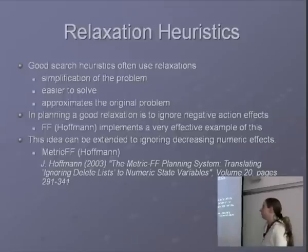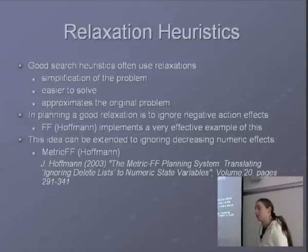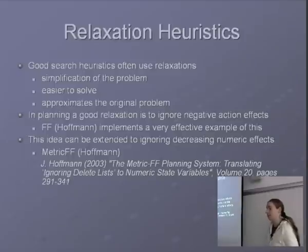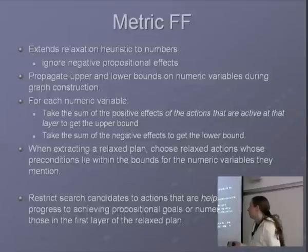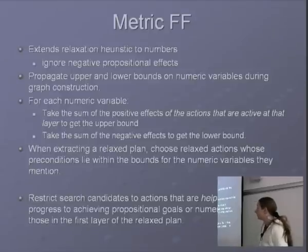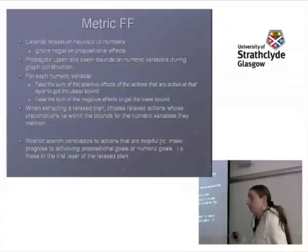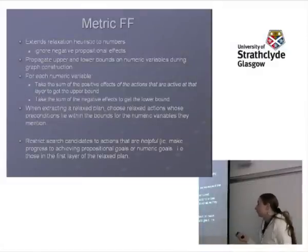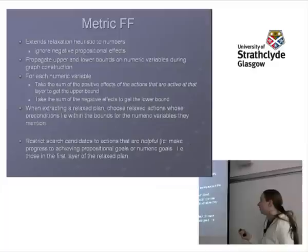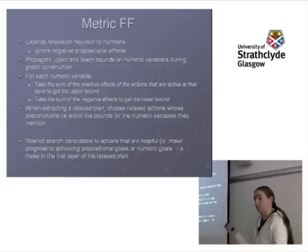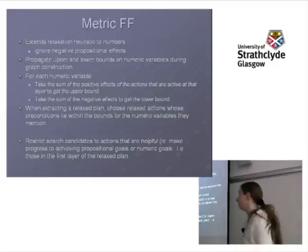Conceptually, we want to ignore negative numeric effects. We can't do that quite so simply, because a precondition might be that a number is less than a certain value, so it might be good to have something decreasing. So we don't want to ignore decreasing numeric effects — we want to ignore numeric effects that are bad to us in some way. We're extending it to numbers and still going to ignore negative propositional effects. For numeric effects, we're going to propagate upper and lower bounds on the numeric variables during construction of our relaxed planning graph. This deals with the case that a low or high value might be what we want — we just keep the most it can be and the least it can be, giving us the range that our number can be in.